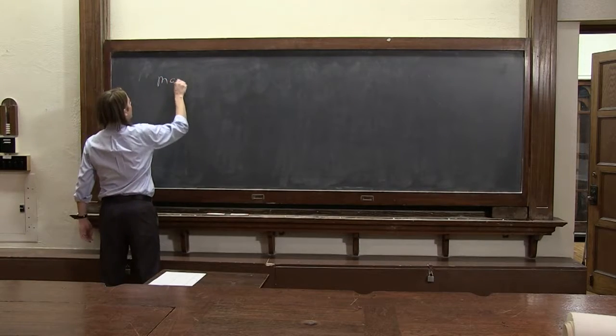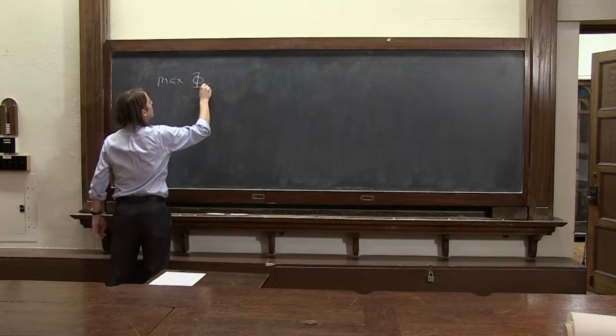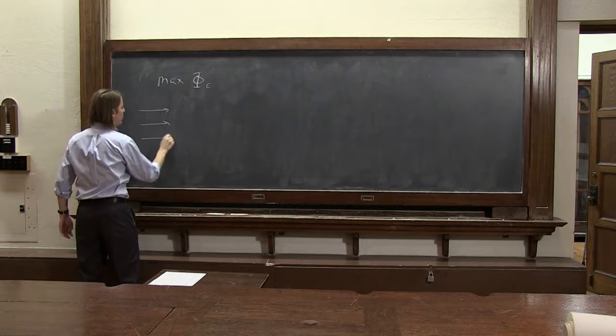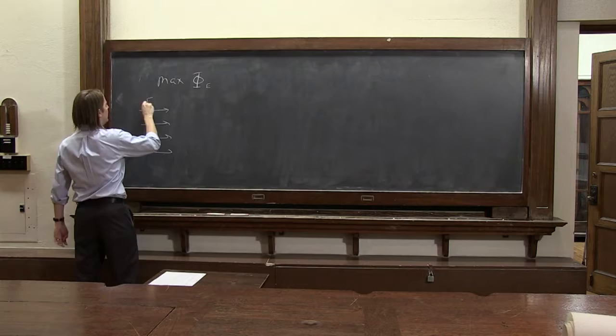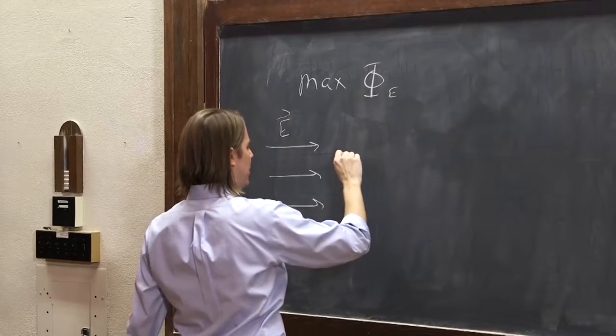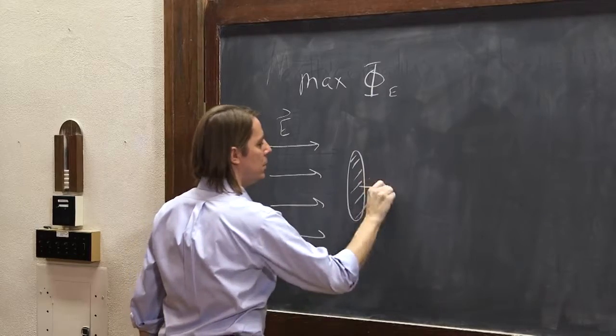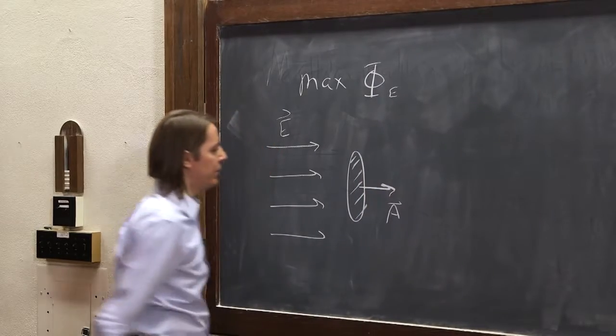The maximum flux would occur when the field is pointing this way. In this case, the area looks like this, with its area vector that way.